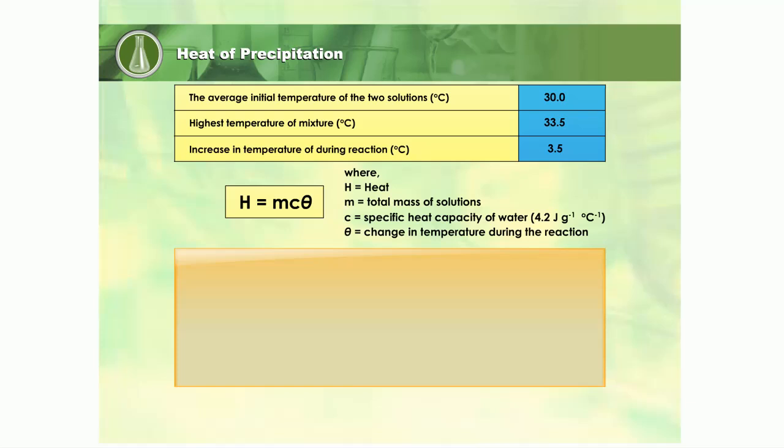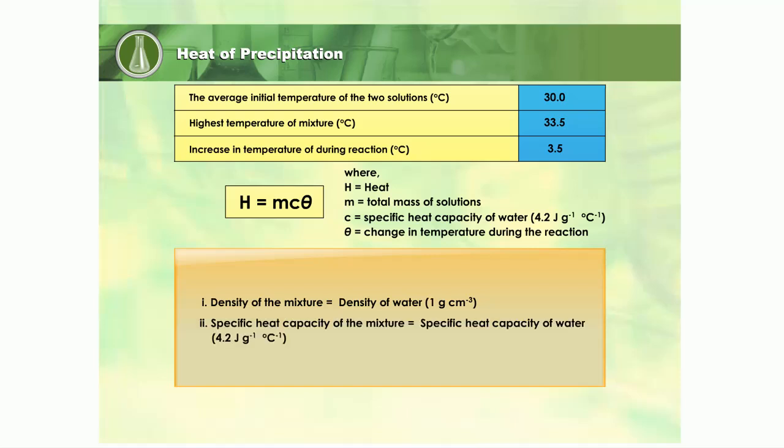From the data in the reaction we observed, we can insert the values in the formula with these assumptions: the density of the mixture is the same as the density of water, that is, 1 gram per cubic centimetre; the specific heat capacity of the mixture is the same as the specific heat capacity of water, that is, 4.2 joules per gram per degree Celsius; and there is no heat lost to the surroundings during the reaction. Now that we have all that we need, let's calculate.